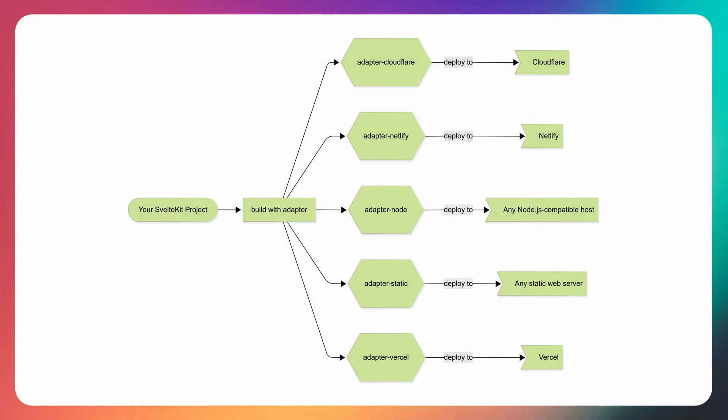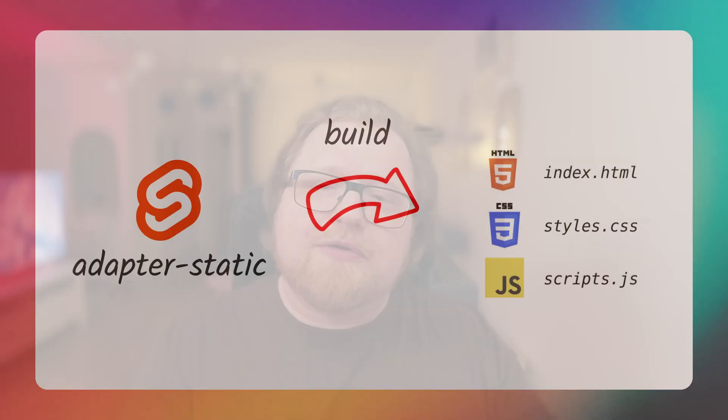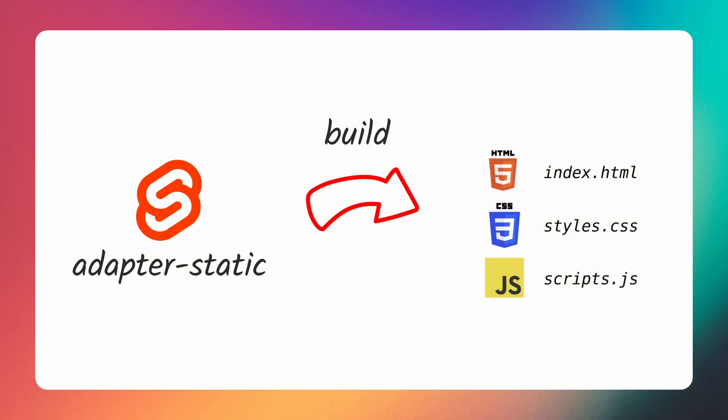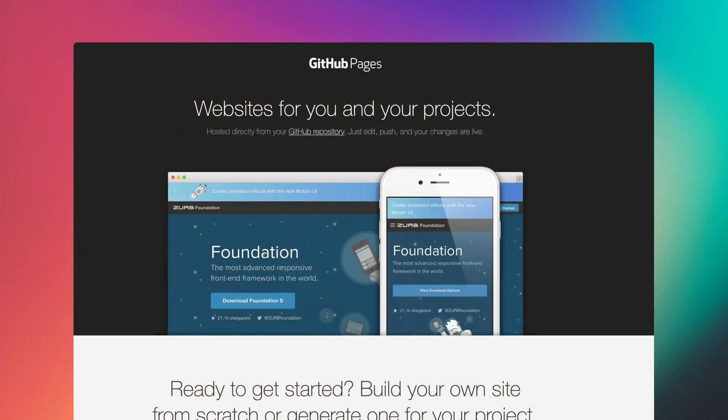I've been building static single-page apps using Adapter Static for a while now. For those unfamiliar with this adapter, it compiles down your app to a folder of HTML, CSS, and JavaScript files. This adapter is a little bit special because it technically doesn't have a backend — everything, including your load functions, runs in the user's browser. It also makes it possible to deploy your SvelteKit site basically anywhere you have a traditional web server, even places like GitHub Pages.